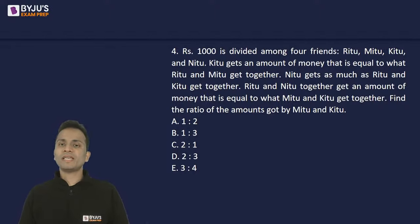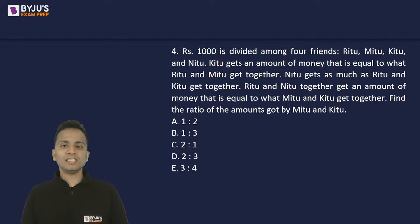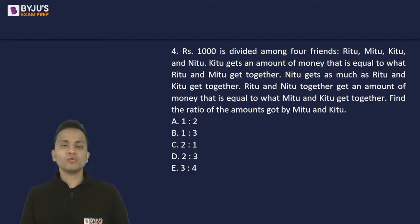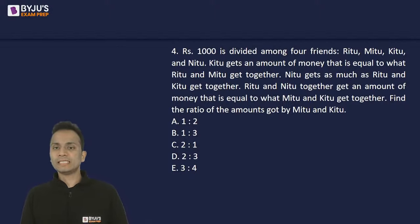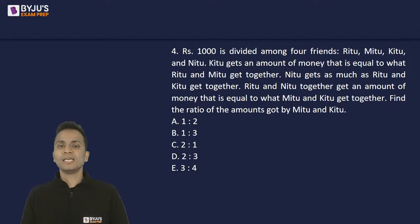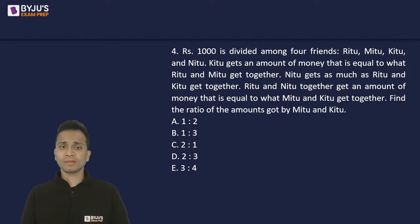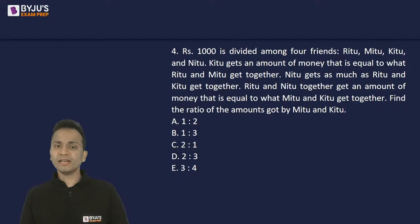Question 4: 1000 rupees is divided among four friends Ritu, Mitu, Kitu, and Nitu. Kitu gets an amount equal to what Ritu and Mitu get together. Nitu gets as much as Ritu and Kitu together. Ritu and Kitu together get an amount equal to what Mitu and Kitu get together. Find the ratio of the amounts received by Mitu and Kitu.